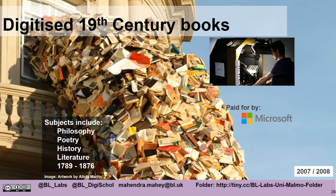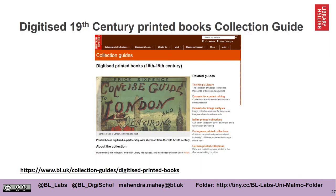The collection we're going to be looking at for your project is a collection of digitized 19th century books — 65,000 books that were digitized in 2007 and 2008. The technology used to digitize them came from that time period. The funding for this project came from Microsoft. Subjects include philosophy, poetry, history and literature, and they cover the date range 1789 to 1876. We strongly recommend that you look at the collection guide for these books, which will give you a much better idea of what's actually in there and the story behind it.